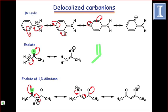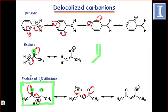Delocalization into multiple electronegative atoms is more favorable than delocalization into fewer atoms. As a result, the enolate of a 1,3-diketone, shown at the bottom of this slide, is the most stable anion on this slide.